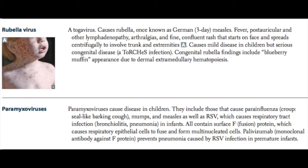Paramyxoviruses are most commonly associated with diseases in childhood. They include those that cause parainfluenza, more commonly known as croup, which is characterized by a seal-like barking cough; mumps and measles; as well as RSV, which causes respiratory tract infection and can lead to bronchiolitis and pneumonia in infants. All paramyxoviruses contain surface F protein, or fusion protein, which causes respiratory epithelial cells to fuse and form multinucleated cells, which can be used to diagnose these viruses.